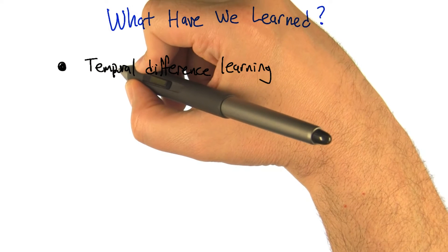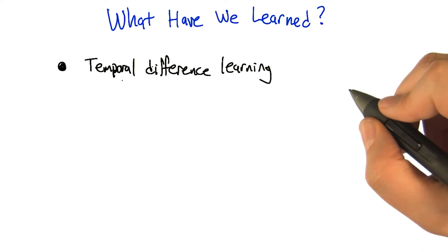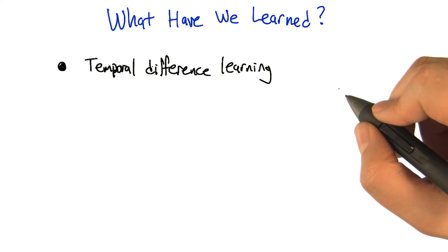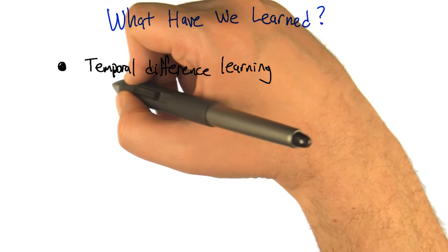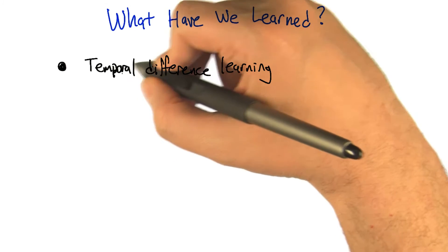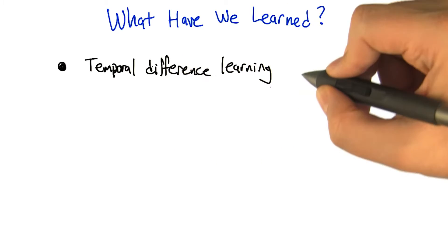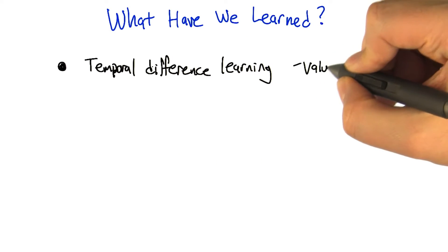And in a nutshell, what's a temporal difference? Well, it's the difference between things you see on different, subsequent time steps. Yeah, what kind of things in different time steps? Reward. So the difference in value estimates as we go from one step to another, right? That's exactly right, because value is just a nice summary statistic for long term reward.